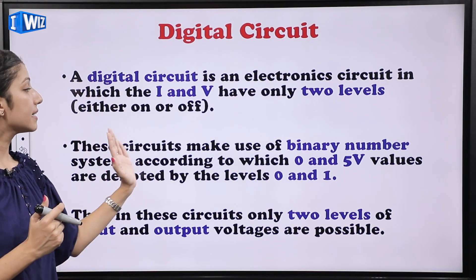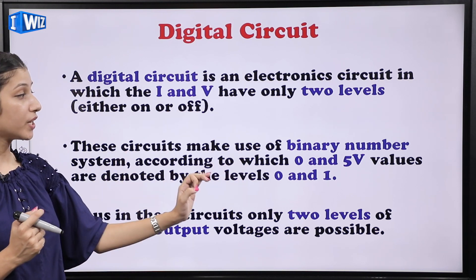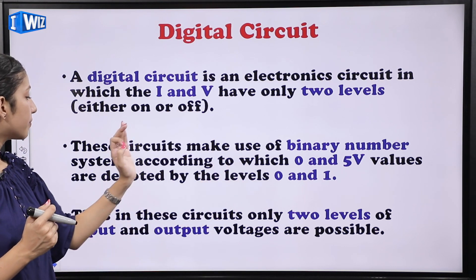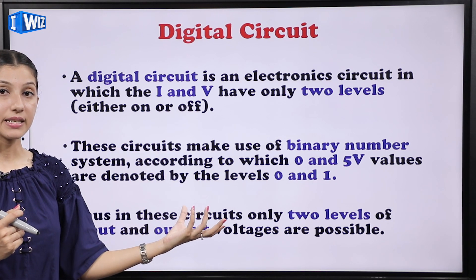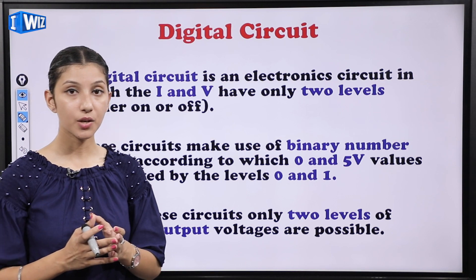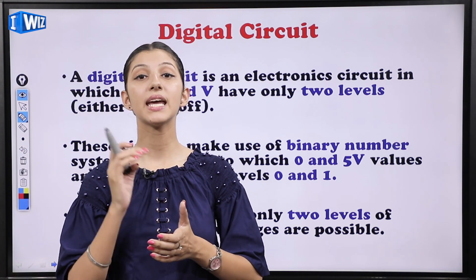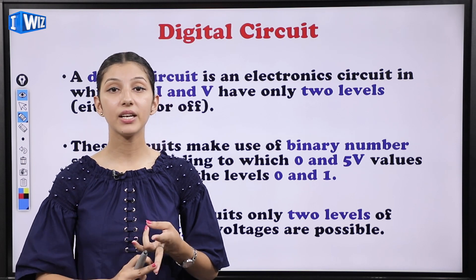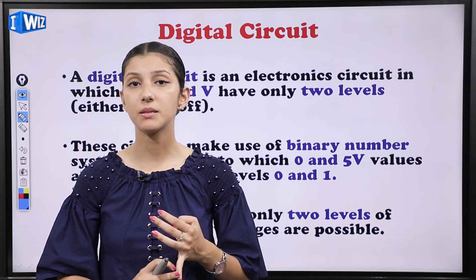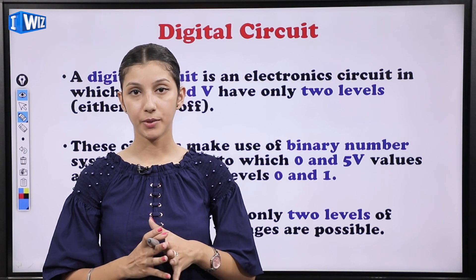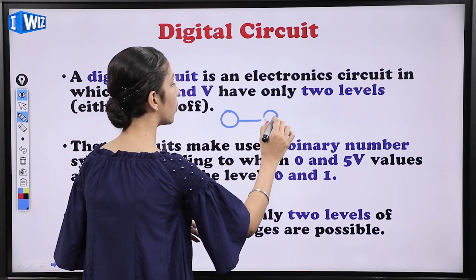These circuits make use of the binary number system, according to which zero and five volt values are denoted by the levels zero and one. In type ke circuits mein hum binary number system ka use karte hain. Ab humare paas bohot saare number systems hote hain — decimal number system, binary number system, octal number system, hexadecimal number system.